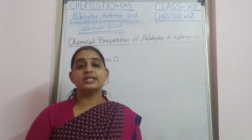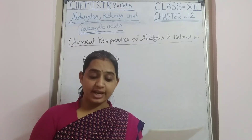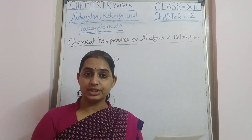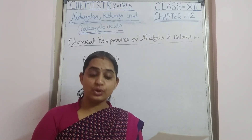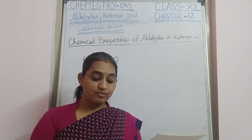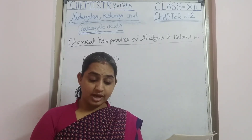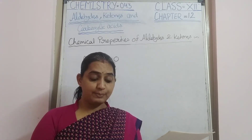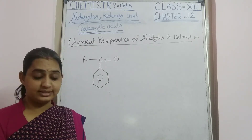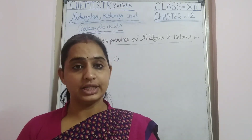Aromatic aldehydes and aromatic ketones are less reactive than aliphatic aldehydes and ketones. This is due to the electron-donating resonance effect — the +R effect of the benzene ring increases the electron density on the carbonyl carbon, repelling nucleophiles. For this reason, aromatic aldehydes and ketones are less reactive compared to aliphatic ones.